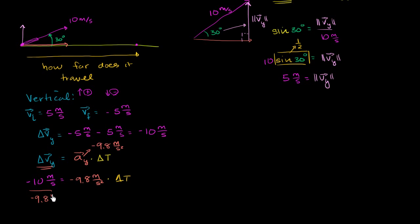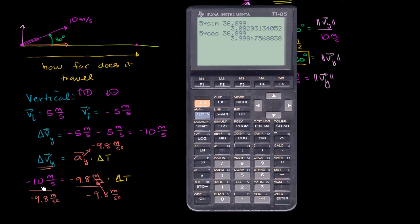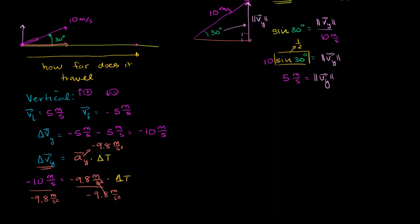Dividing: negative 9.8 meters per second squared cancels out, and I have a negative divided by a negative, so that's a positive — which makes sense since we want positive elapsed time. Using the calculator: 10 divided by 9.8 gives me 1.02. So our change in time, delta t, is equal to 1.02 seconds.